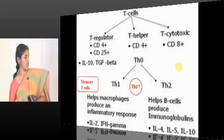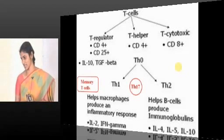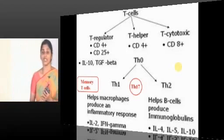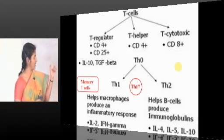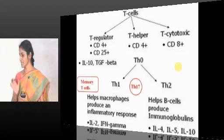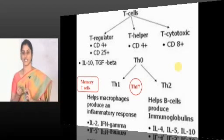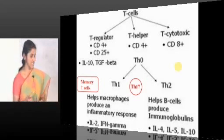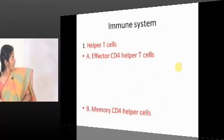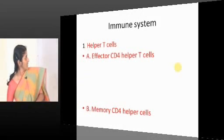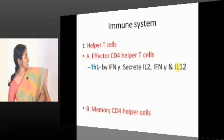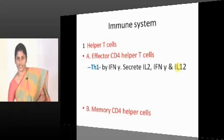Memory T-cells are again a subset of helper T-cells. You have to revise your answer: helper T-cell subsets are TH1, TH2, TH17, and of course memory T-cells. So within the immune system, helper T-cells are divided into effector and memory T-cells. Effector T-cells are TH1, TH2, and TH17.